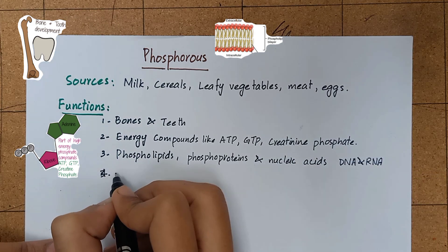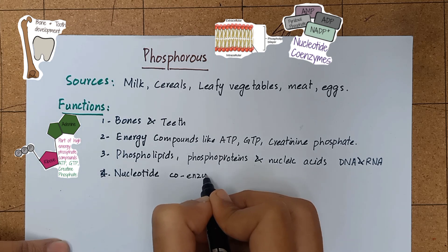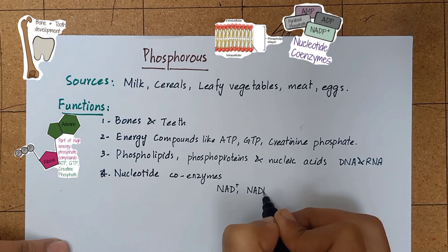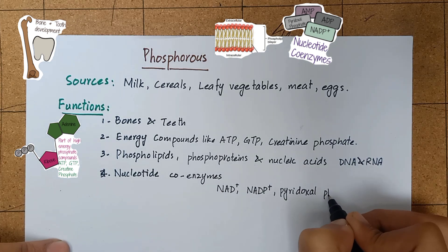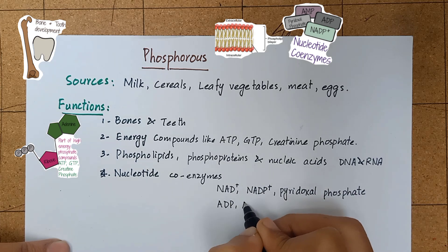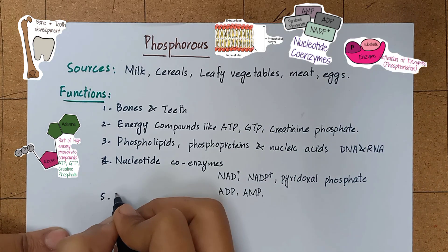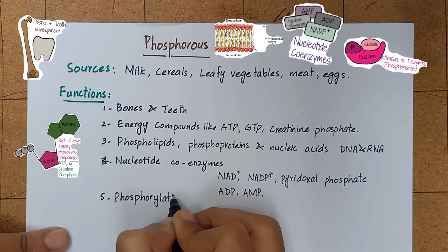It is an essential component of nucleotide coenzymes like NAD, NADP, pyridoxal phosphate, ADP, and AMP. The process of phosphorylation is essential for activation of many proteins and enzymes.